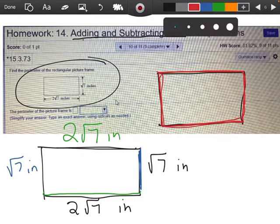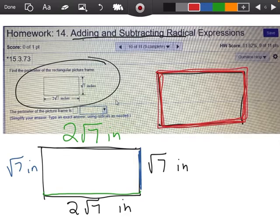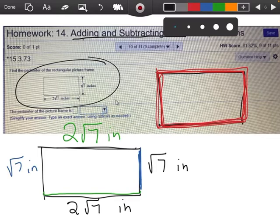And since the perimeter just means the distance all the way around, all I'm going to do is start adding these numbers up. So let's do it like this. Let's start here.